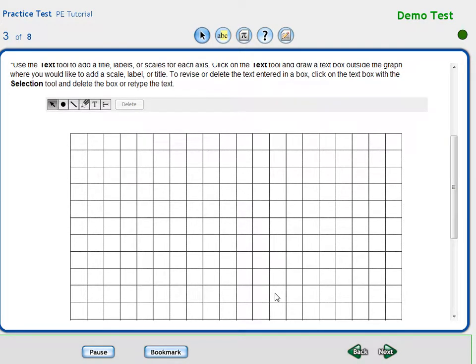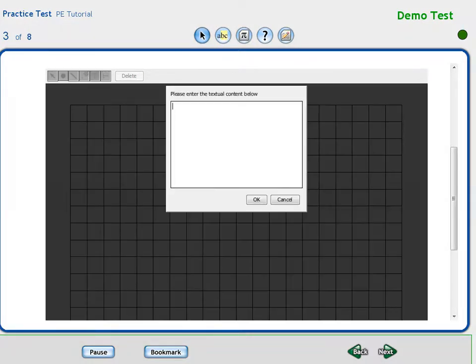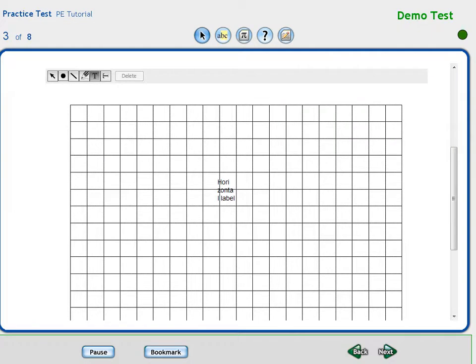All graphs will require axes, scaling, and labeling. This will be accomplished using the selection, line, and text tools. Users will need to determine the location of the horizontal and vertical axes. In this tutorial, the axes will be placed on the left side and at the bottom of the 20x20 grid. Users may place the axes in other locations if they desire.